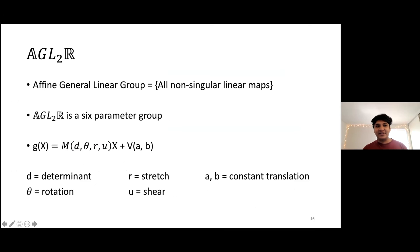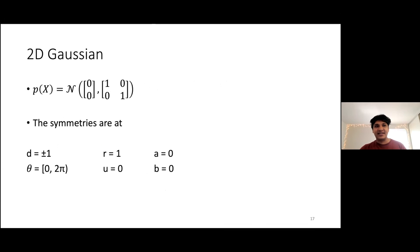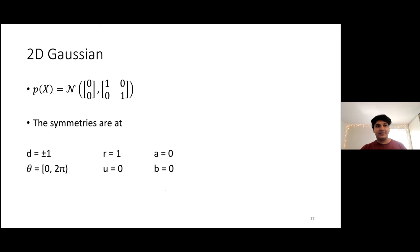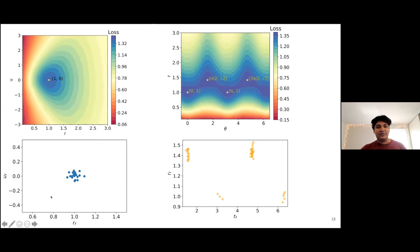And when you analyze this, you have to analyze this in various things, because you can't plot a six-dimensional plot. You need to take various slices. And for the 2D Gaussian, the correct symmetries would be at d equals plus minus one, theta equals zero to pi, r equals one, u, a, and b are all zero. And that is indeed what we find. I've just shown you one slice here, out of the six different possible slices, but all six slices, the numerics and the analytics match precisely.